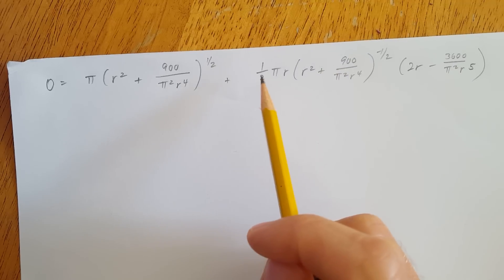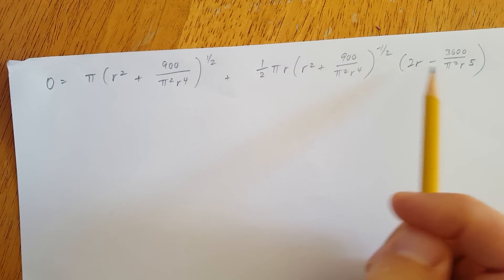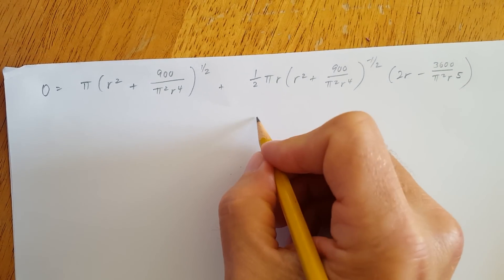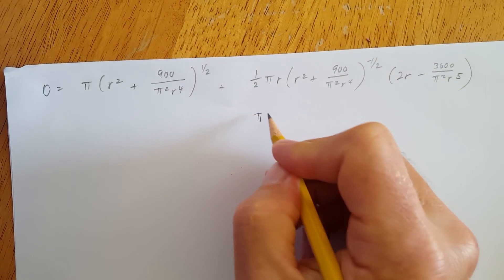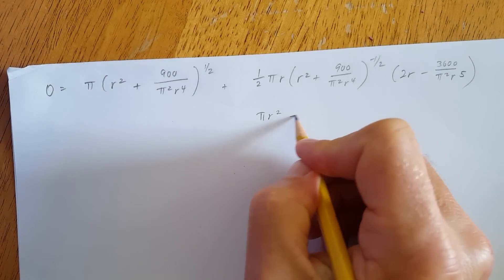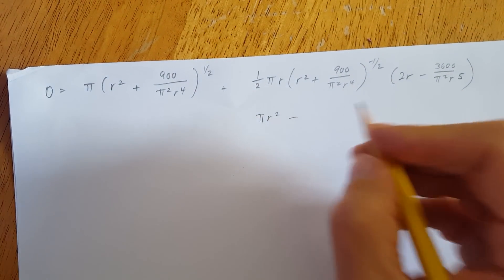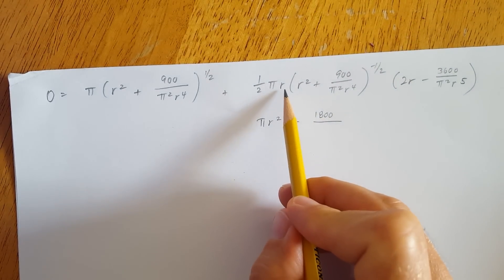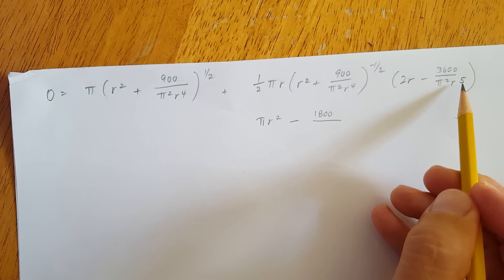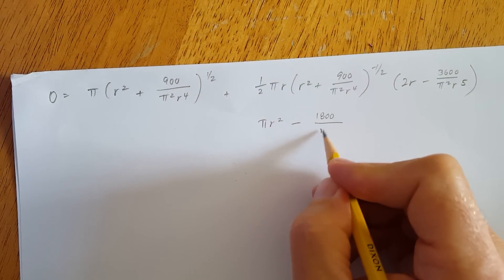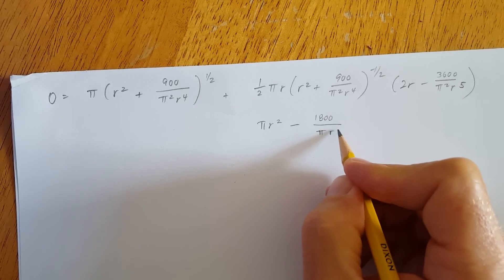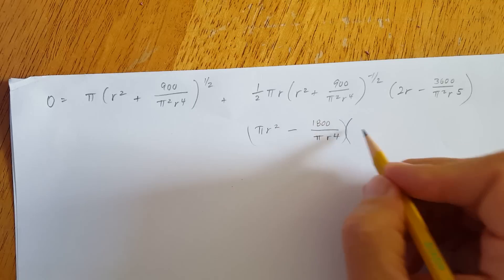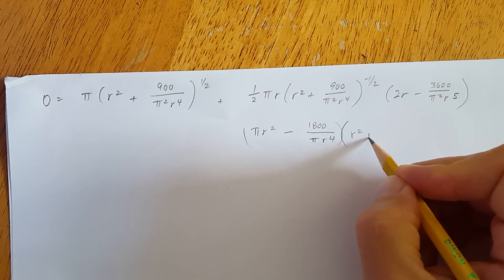First thing we're going to do, to make this thing simpler, is distribute across this term. So first we are going to have pi r squared minus one half of 3600, which is 1800. Now we have pi r and pi squared r to the fifth, so we're going to lose a pi — one pi is going to cancel and one r is going to cancel. We're going to keep this term the same, we haven't touched it, plus 900.